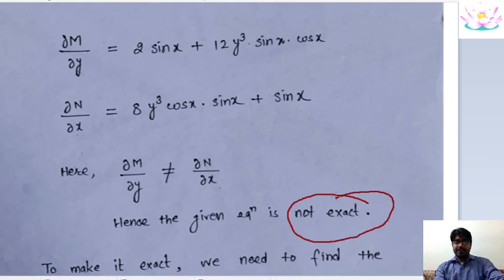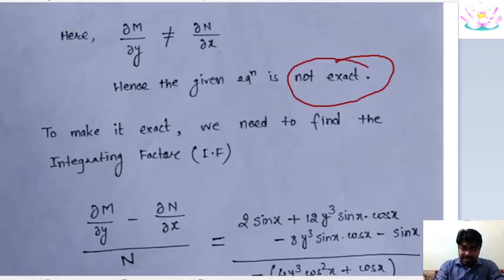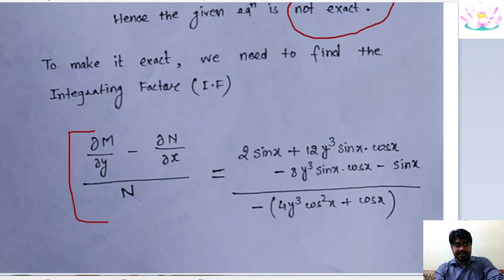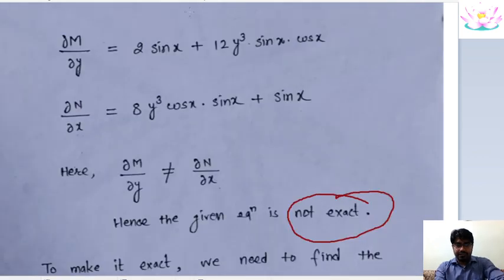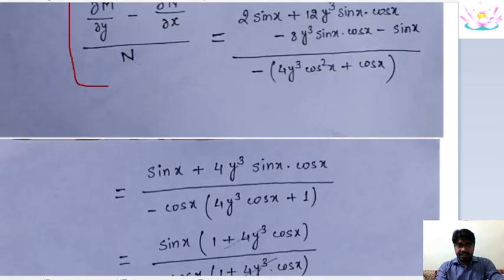Since the equation is not exact, we will have to find the integrating factor. After multiplying the integrating factor into the non-exact equation, we get an exact equation. This is one method to calculate the integrating factor: (∂M/∂y − ∂N/∂x) / N. I simply substitute the values of ∂M/∂y and ∂N/∂x here and after simplifying, we get 2·sin x − sin x giving sin x in the numerator.